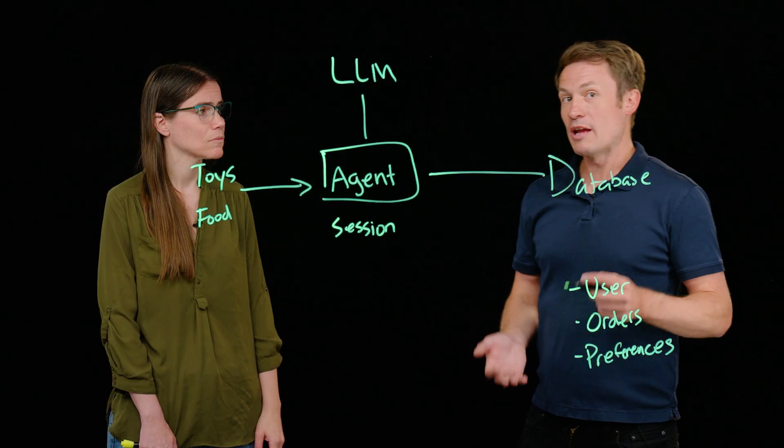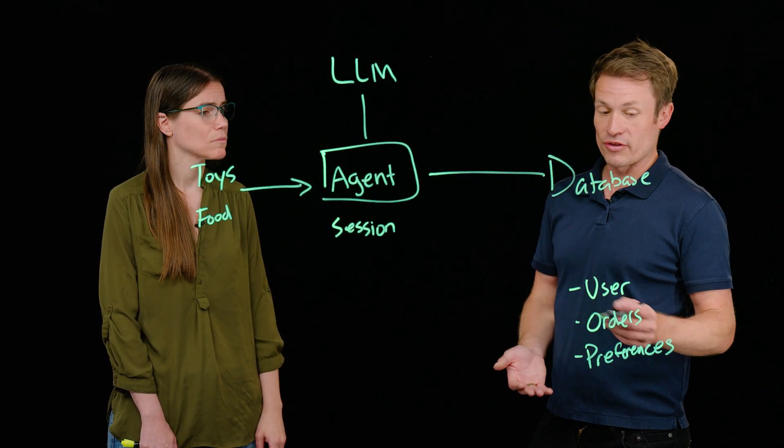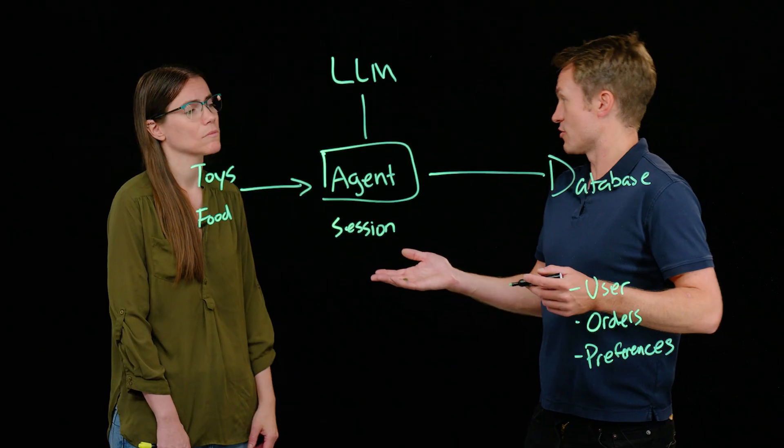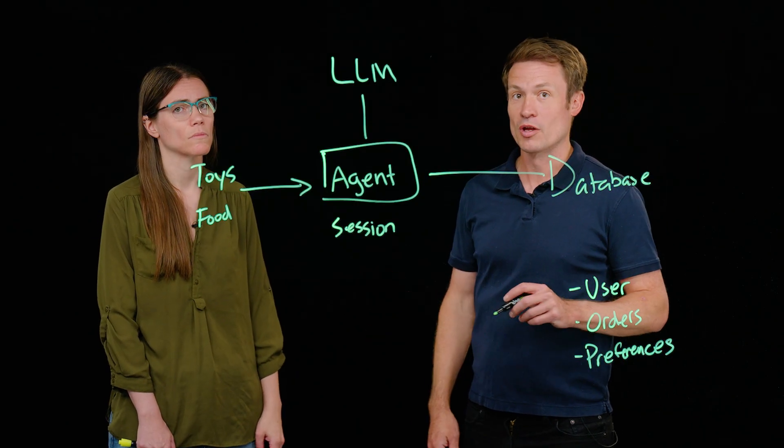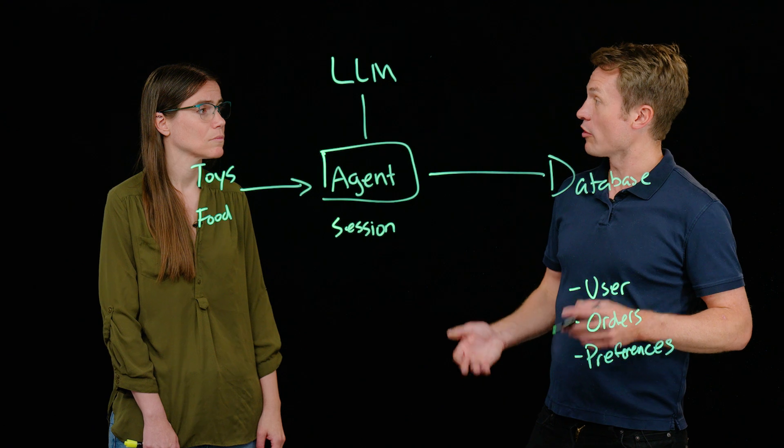And then long-term memory, which may be things like attributes that we store about our users over time or things like the order history for things that you've purchased from the pet shop before. All these things can actually help us make our pet shop agent more useful.